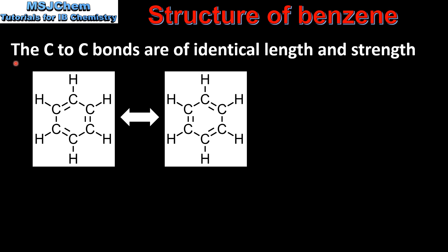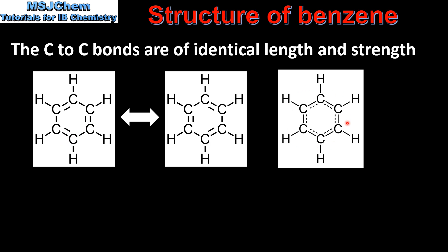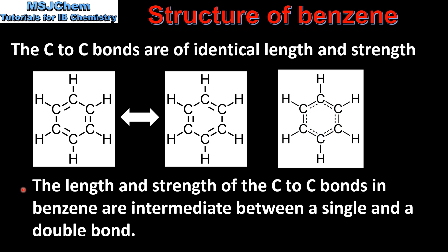The first reason is that the carbon-to-carbon bonds in benzene are of identical length and strength. If we look at the resonance structures of benzene, we'd expect the single bonds to be longer and weaker and the double bonds to be shorter and stronger. However, measurements have shown that all the bonds in benzene are of equal length and strength. The resonance hybrid structure shows that all bond lengths and strengths are the same between the carbon atoms — intermediate between a single and a double bond.